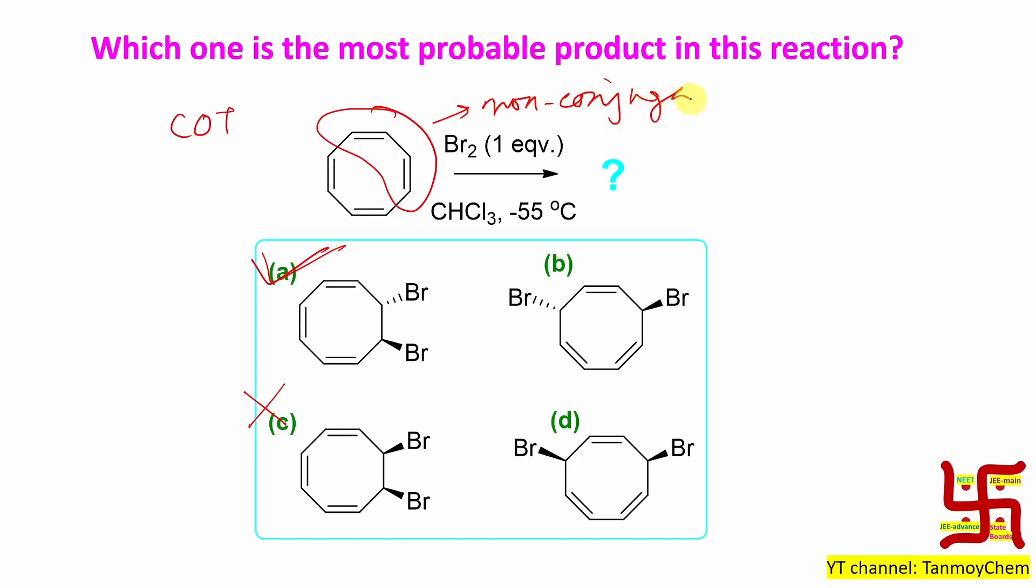1,4 addition cannot take place. Either it is in syn or anti, option B not possible, D not possible. Only 1,2 addition possible. I mean, option A and C and since bromine addition occurs in an anti-orientation, so that's why this option A will be the major product.